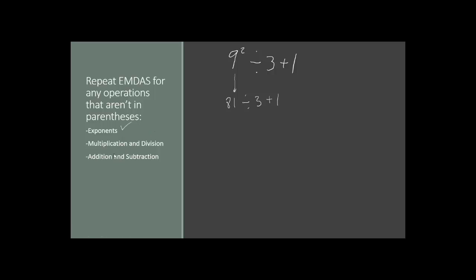Now we do any multiplications and divisions. We have a division right here: 81 divided by 3, which is 27. Still plus 1. That takes care of our multiplications and divisions. Then we do any additions or subtractions that remain — 27 plus 1, which gives us 28.